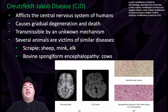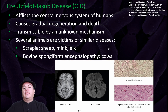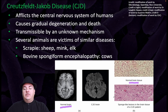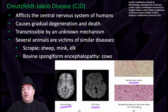It's transmissible by an unknown mechanism, and several animals are victims of similar diseases. For example, you can have scrapie in sheep, mink, and elk, or bovine spongiform encephalitis in cows. Here you can see some images of normal brain tissue compared to an individual affected by this disease, in both the whole brain and brain tissue sections.